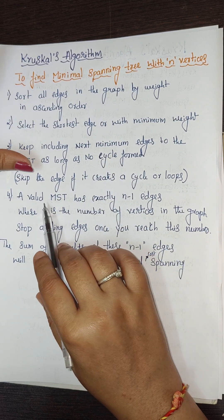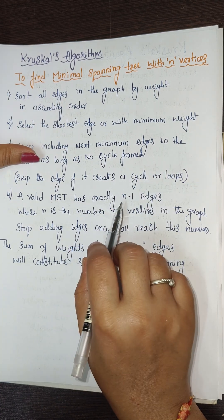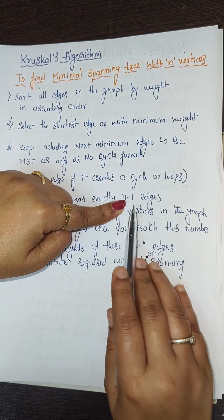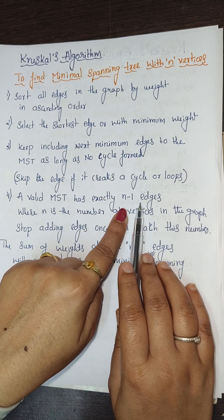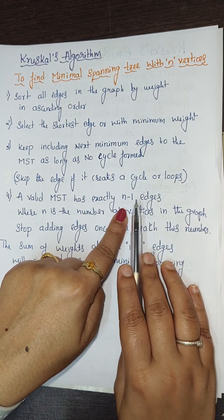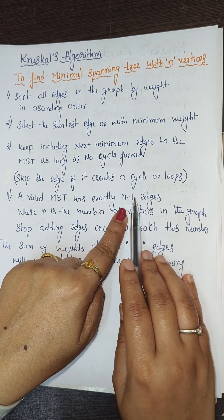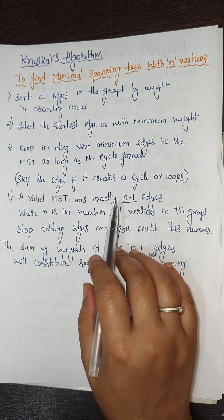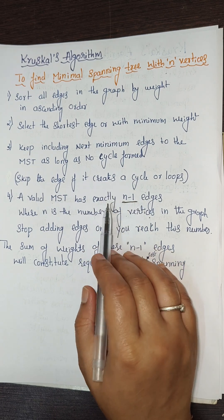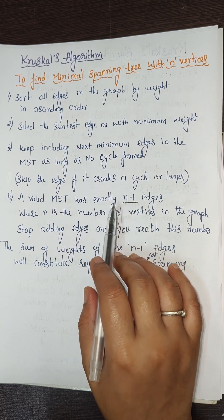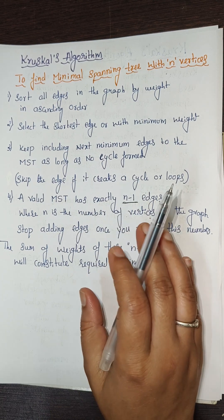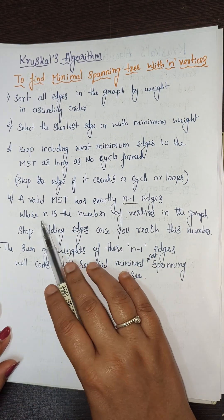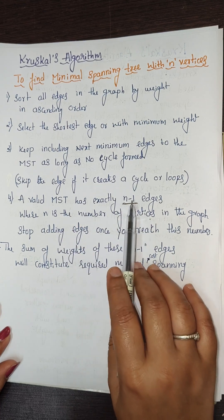Step 4: A valid MST has exactly n minus 1 edges, where n is the number of vertices. For example, if there are 10 vertices, there should be exactly 9 edges. Not less, not more — exactly n minus 1 edges. If you are not getting n minus 1 edges, you have made a mistake somewhere and should redo the process.